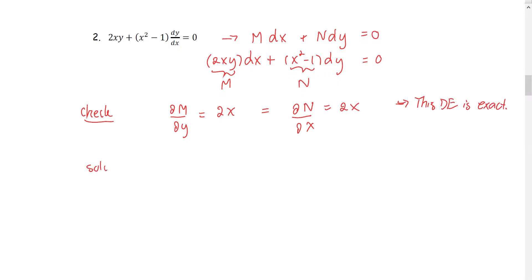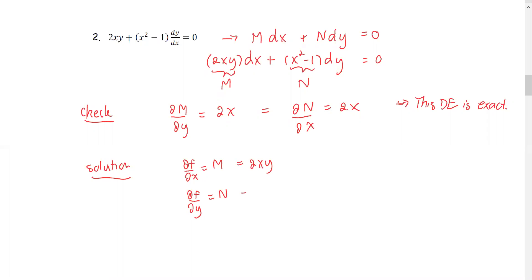Next, we're going to find the solution. Note that the partial derivative of the solution with respect to x is M, and the partial derivative of the solution with respect to y is the N expression. Our M is 2xy and our N is x squared minus 1.